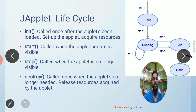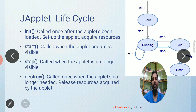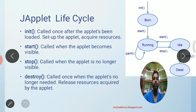When the user maximizes the window again, the start method will be called again. The paint method is where we write code to draw or write something into the applet. If you want to draw something into the applet, you use the paint method. The destroy method will be called before removing or closing the applet, and in destroy we can release the resources which were acquired by the applet.